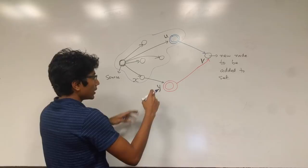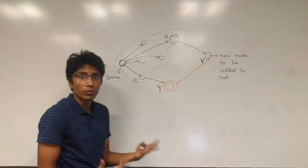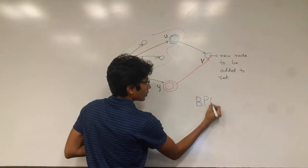So the best possible distance to v is actually less than what we found, which is d of v. Alright, that's the first condition.